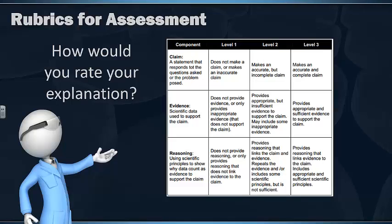And then for reasoning, are you more at a level 1, so you don't provide reasoning, or you provide reasoning that doesn't link the evidence to the claim? Or are you more at a level 3, where you provide a great link between the evidence and the claim?